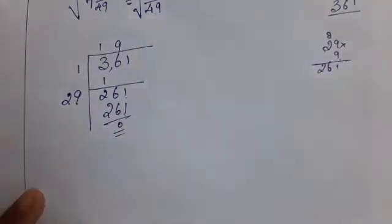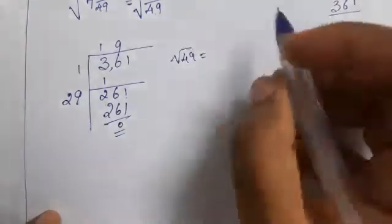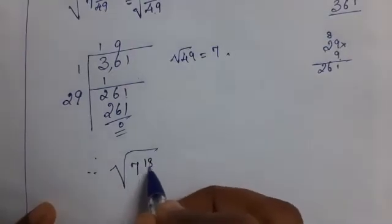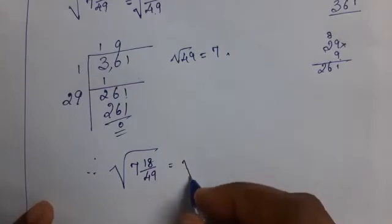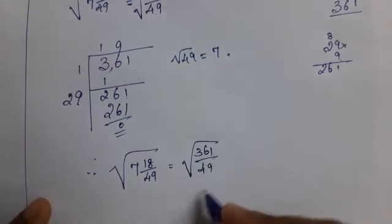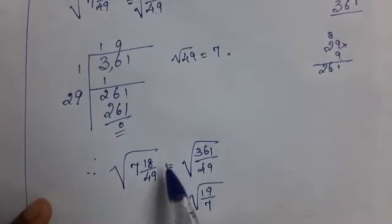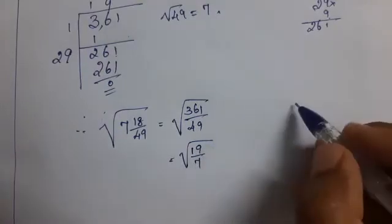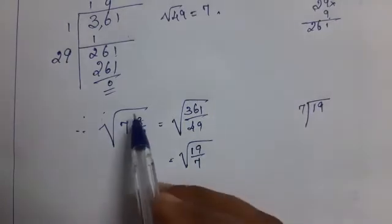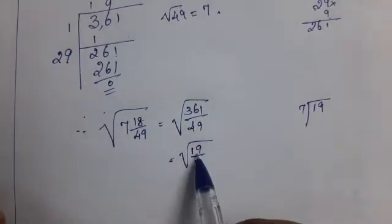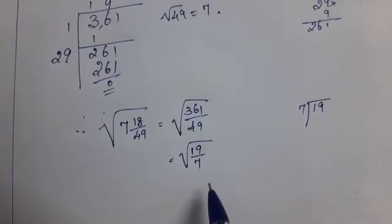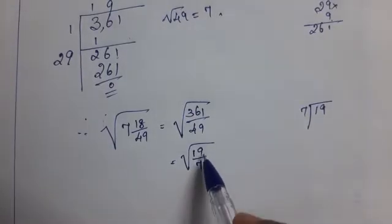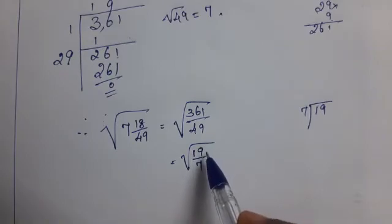Now, what is the square root of 49? It is 7. 7 squared is 49. Therefore, square root of 7 and 18 by 49 equals square root of 361 divided by 49, which is 19 by 7. The question is in mixed fraction. Here the numerator is greater than the denominator, therefore find the mixed fraction.